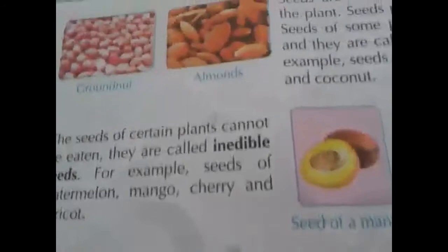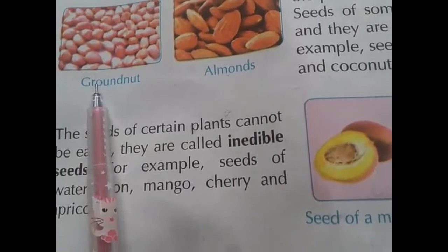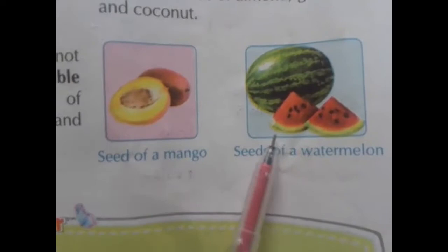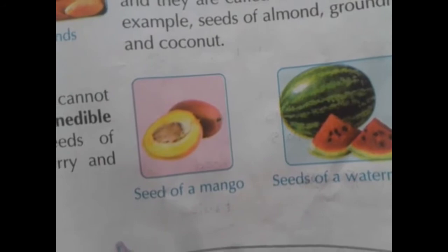See the picture — groundnut, almonds, and coconut are edible seeds. Some seeds which we can't eat: apricot seed, watermelon seed, and papaya seed — we can't eat. These seeds are called inedible seeds.